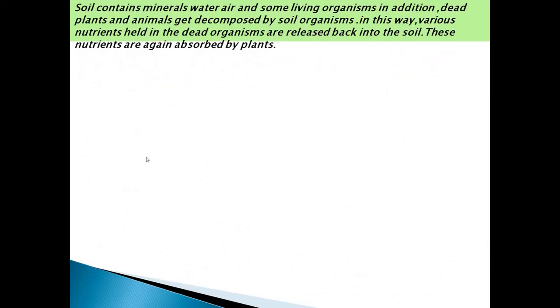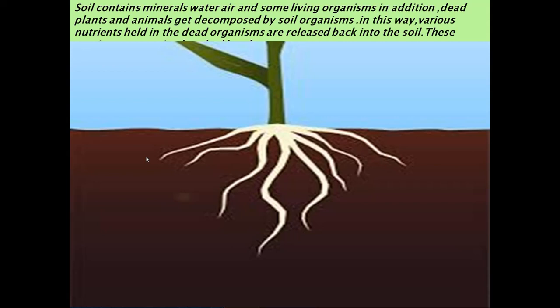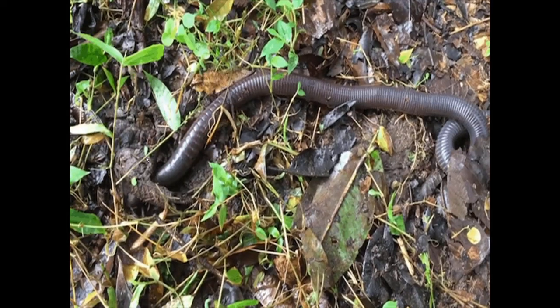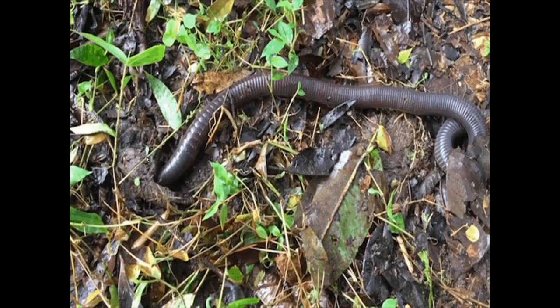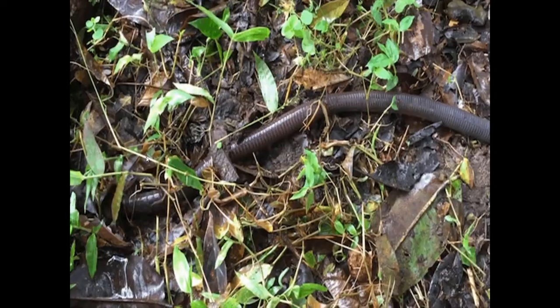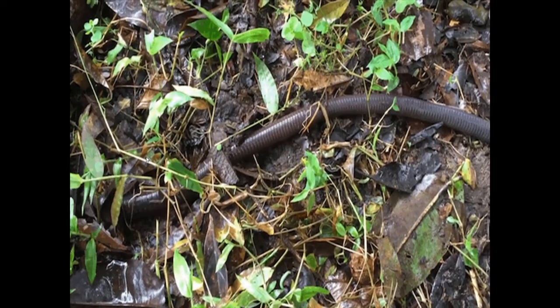You learnt in the previous class that soil contains minerals, water, and some living organisms. Dead plants and animals get decomposed by soil organisms. Various nutrients in the dead organisms are released back into the soil and these nutrients are absorbed by the plants. You can observe here how earthworms convert dried leaves into humus and also loosen the soil by dwelling and moving within it.